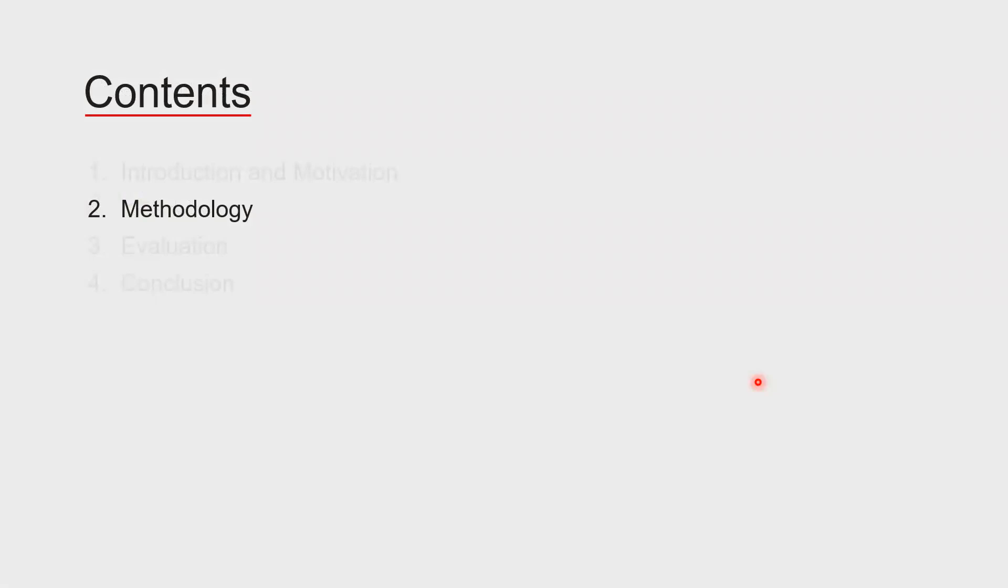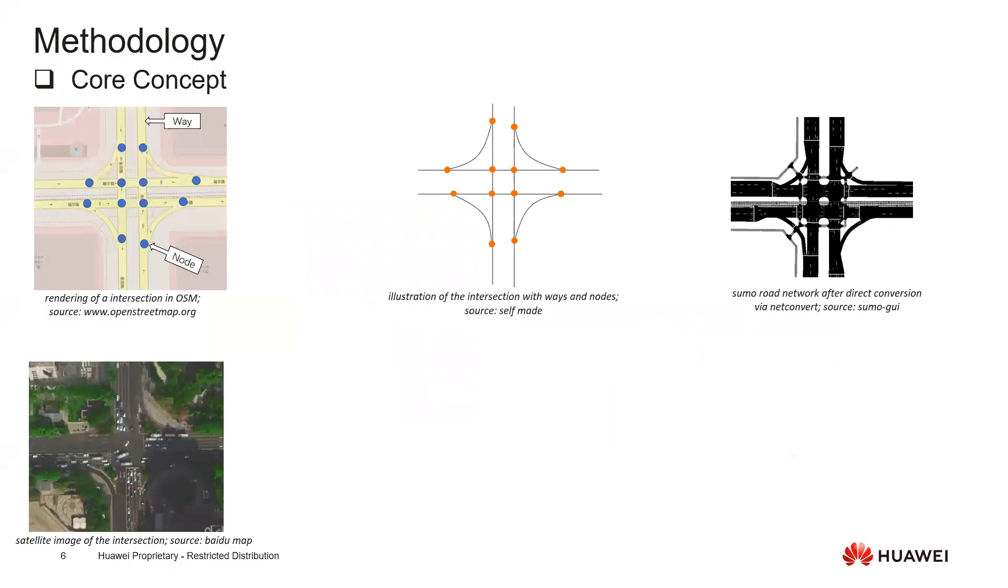So how did we do that? Let's take a close look at the methodology. As the very first, I would like to introduce our core concept. As you can see here, this is an intersection we got - this is satellite image from the intersection and this is how it is represented in OpenStreetMap OSM data.